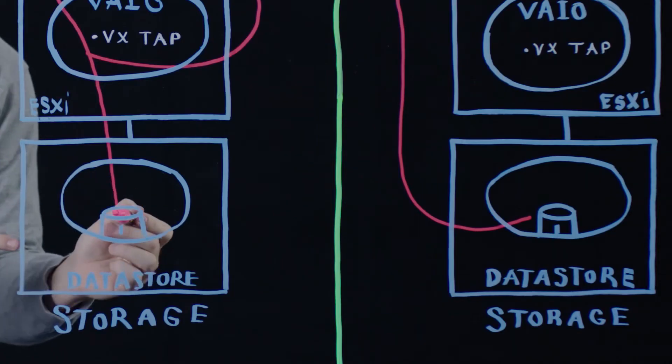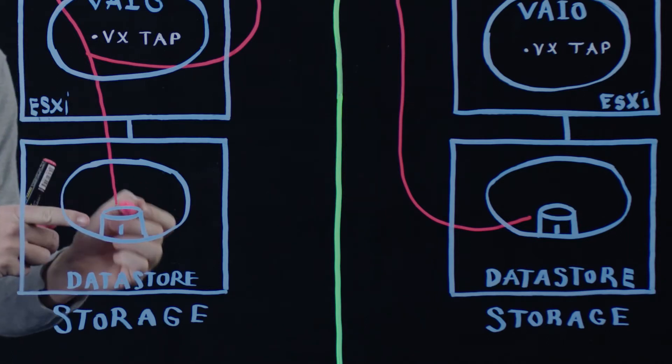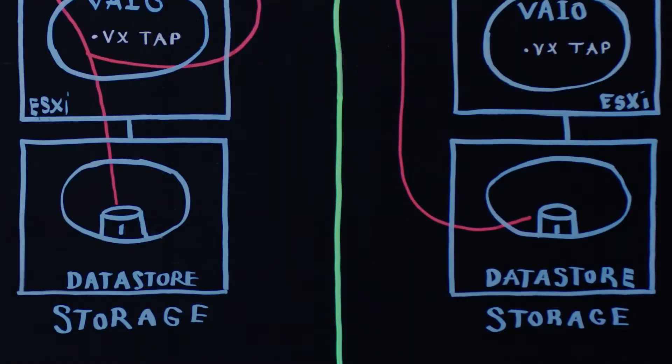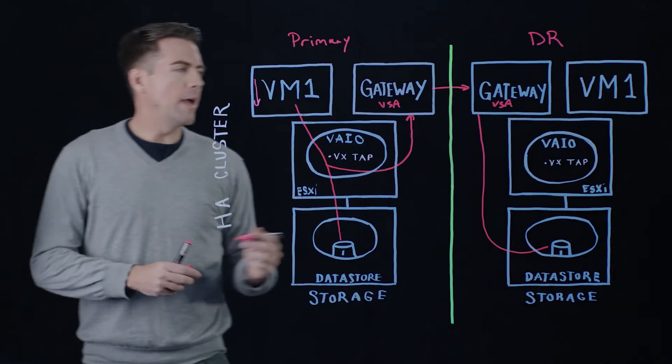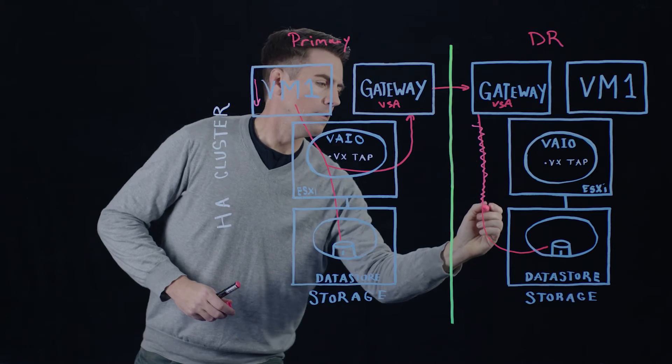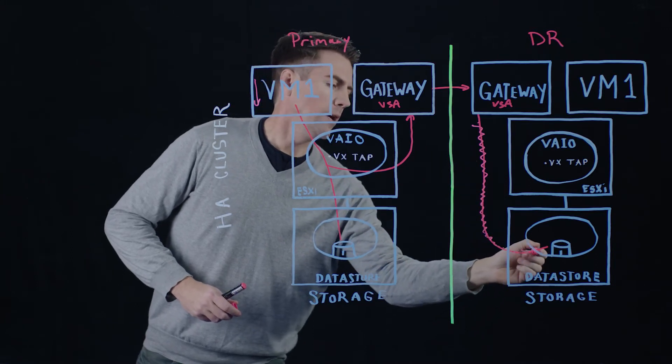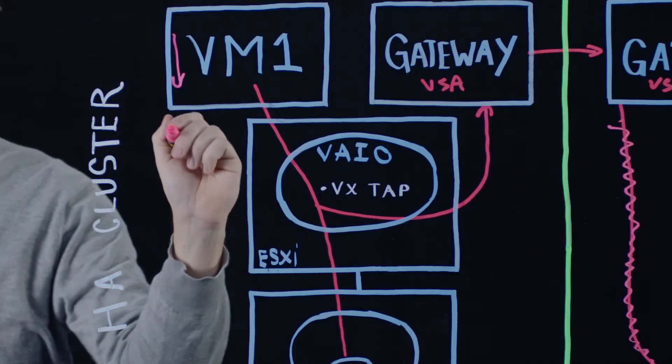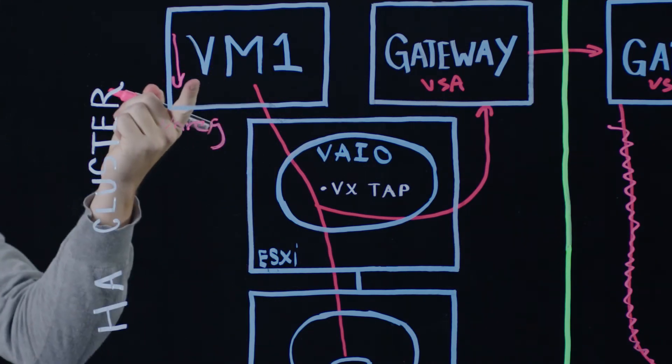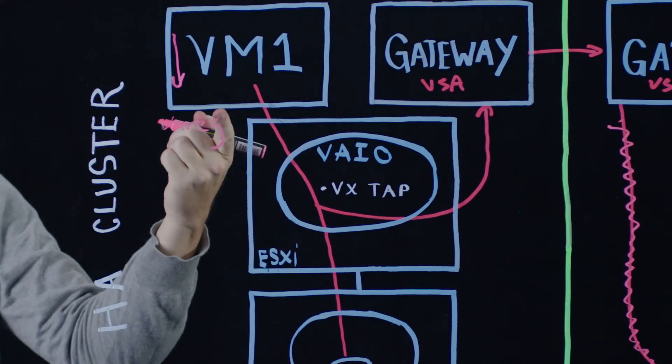Now we already have our data synchronized between disk one here and our disk at the DR data center. Next thing we do is we actually detach this disk from our gateway appliance. We then unregister VM1 from the inventory at the primary site.